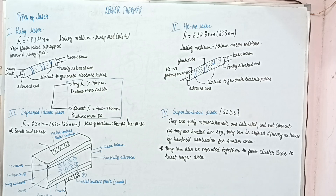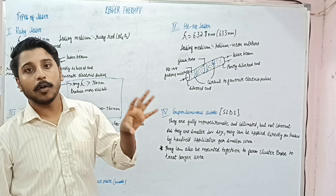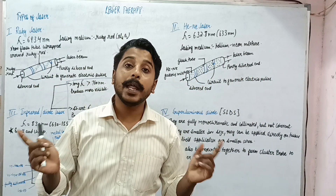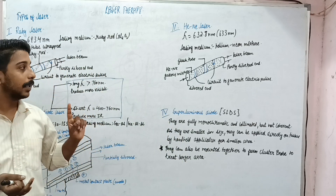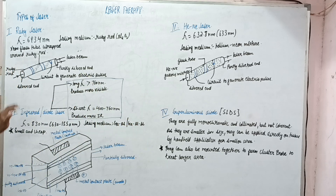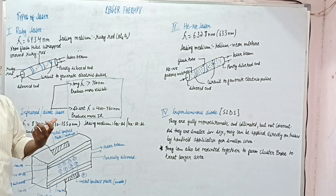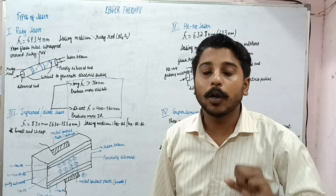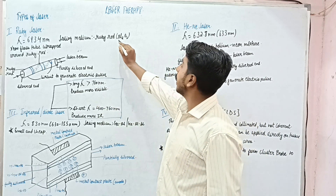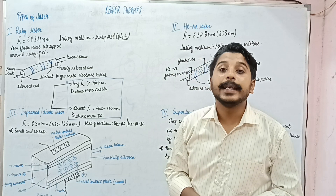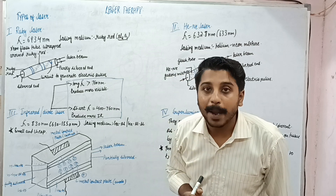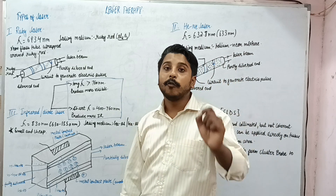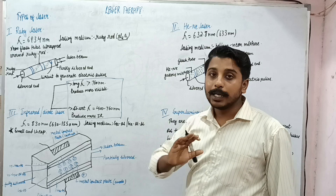The first type is the Ruby laser. Before watching this lecture you need to watch the previous lecture in which I explained the principle and production of laser, so you will understand this concept more easily. In Ruby laser, we use a ruby rod for the production of laser. The ruby rod is made up of aluminium oxide, that is Al2O3, and this will be our lasing medium. Its wavelength will be around 693.4 nanometers and it will give a red laser beam.